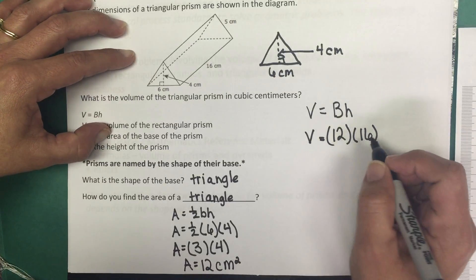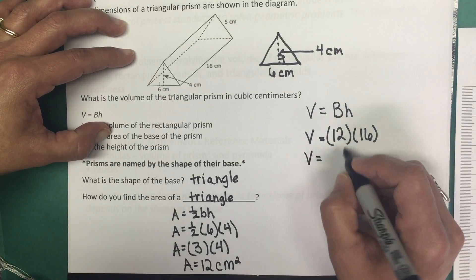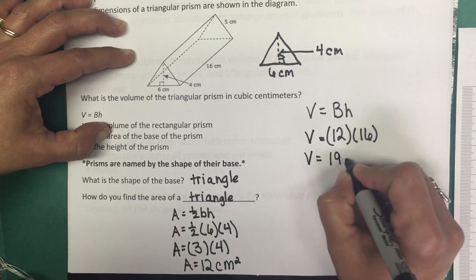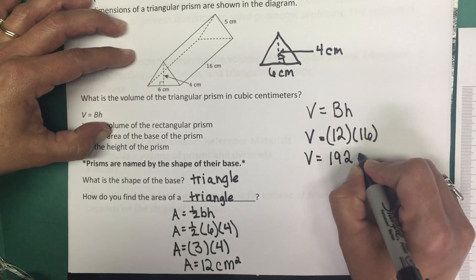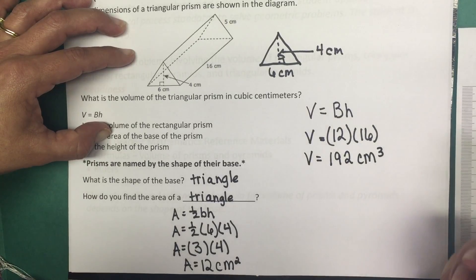So the last step here is to multiply 12 times 16, which is 192 centimeters cubed. So our volume is 192 centimeters cubed.